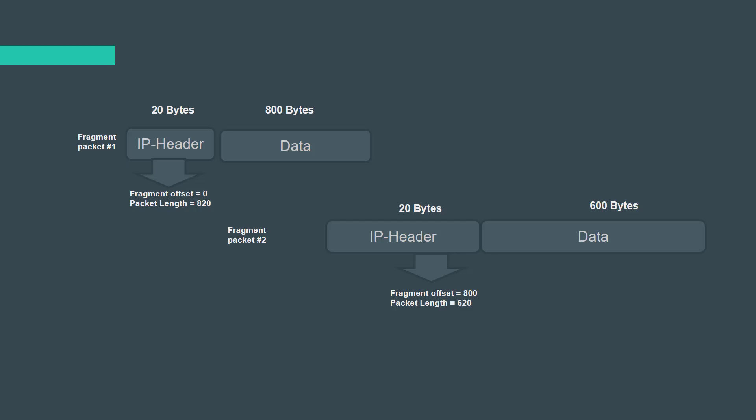Let me show you this image. The first packet starts from zero and has a length equal to 820 bytes — 20 bytes header and 800 bytes of data. In a normal situation, the second packet should start from offset 820, but as you can see in the image, the fragment offset is 800. So these two packets overlap each other by 20 bytes. When these fragments are received by the server, they cannot be reassembled, so the server is confused and crashes.